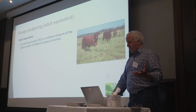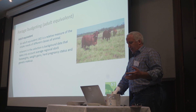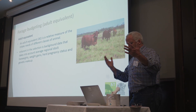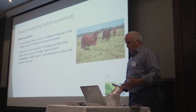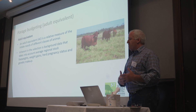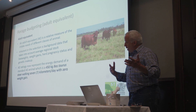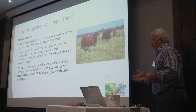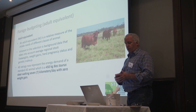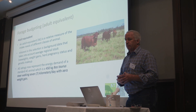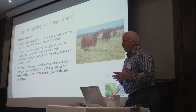It comes down to supply and demand. Inherent in the background data, it takes into account all the average regional stock liveweights, herd, pregnancy status, genetic makeup — everything. The new AE rating is a 450-kilo Bostoros animal walking seven kilometres with zero weight gain. That is the new definition of an adult equivalent.